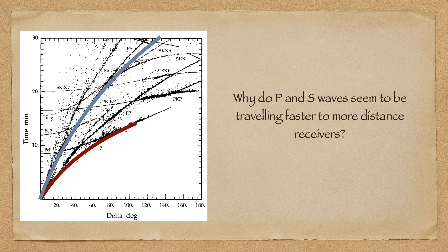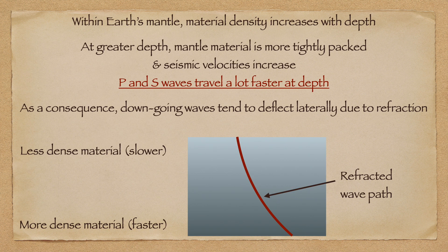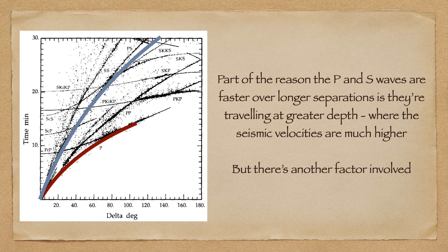These arrival times are not a linear function of distance, which should be the case if the velocities were constant. So what's going on here? Well, quite simply, within Earth's mantle, P- and S-wave velocities aren't constant. As you go deeper in the mantle, the material becomes denser and seismic velocities increase. Incidentally, this has the side effect that downward propagating wavefronts refract. This would seem to explain why P- and S-waves detected at receivers farther from the source seem to have traveled there faster than those detected closer to the source. But that's not the whole story.